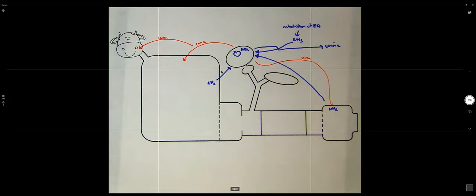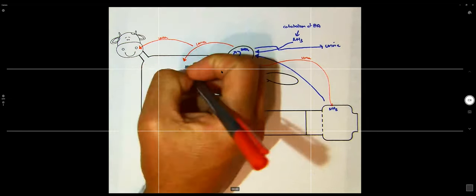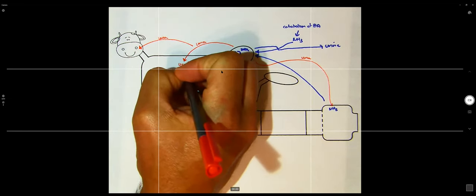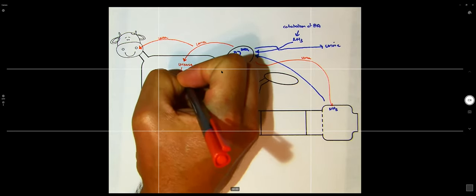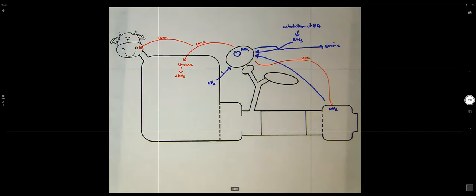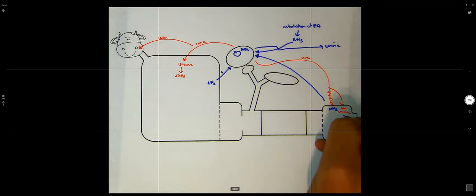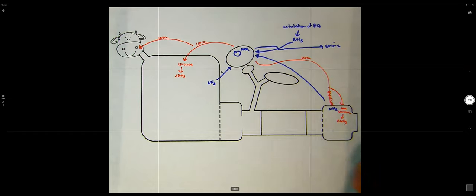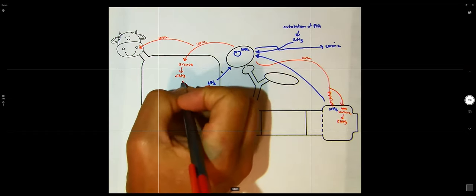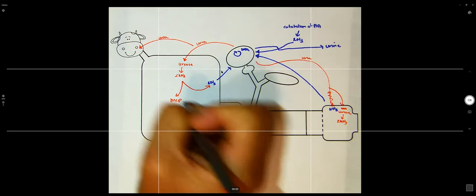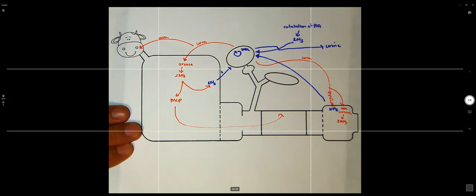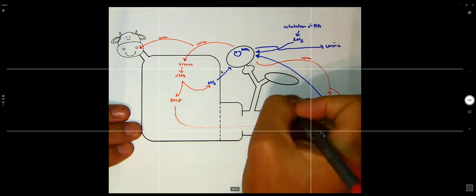Urea moves around everywhere — in your saliva, sweat, and plasma. But it can enter the rumen or large intestine, where urease, an enzyme synthesized by microbes, converts urea back into ammonia (NH3). Those ammonias can be reabsorbed, or they can be used to synthesize microbial crude protein (MCP). The MCP can then be absorbed and do all the good things that amino acids can do.